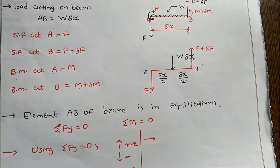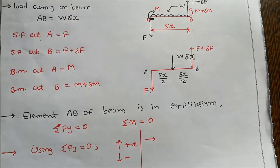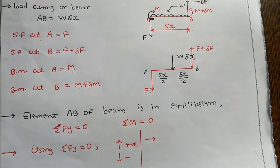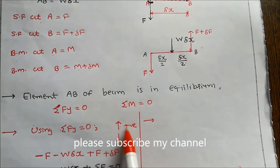The element AB is in equilibrium condition. For equilibrium: the algebraic sum of horizontal components is equal to zero, the algebraic sum of vertical components is equal to zero, and clockwise moment is equal to anticlockwise moment. For the small portion of the beam, we apply the algebraic sum of vertical components equal to zero — that is, sigma Fy equals zero. Our sign convention is: upward force is positive and downward force is negative.